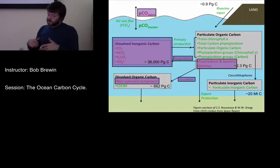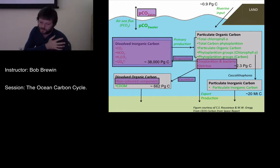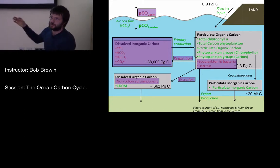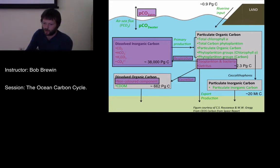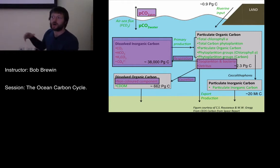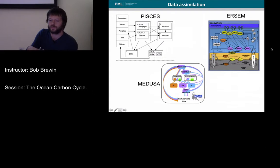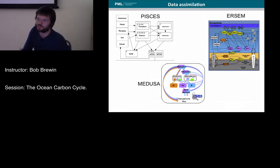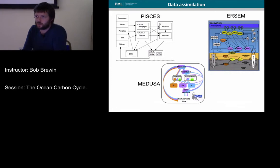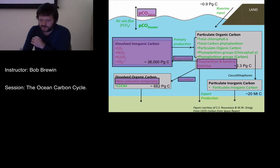In terms of the carbon cycle, there are clearly many components that we can't observe from satellite data. In order to improve our estimates of these components, a lot of effort is going into assimilating the observations we can see from remote sensing into carbon cycle models, to improve our estimates of the unseen components. Examples of ecosystem models and carbon cycle models are being developed to assimilate these ocean colour observations.